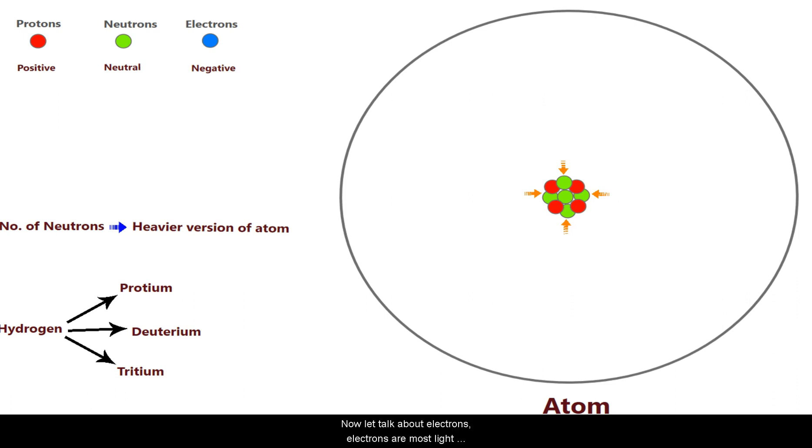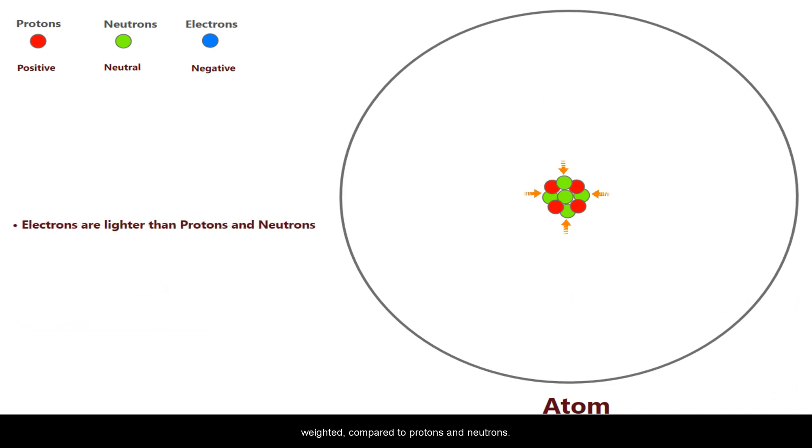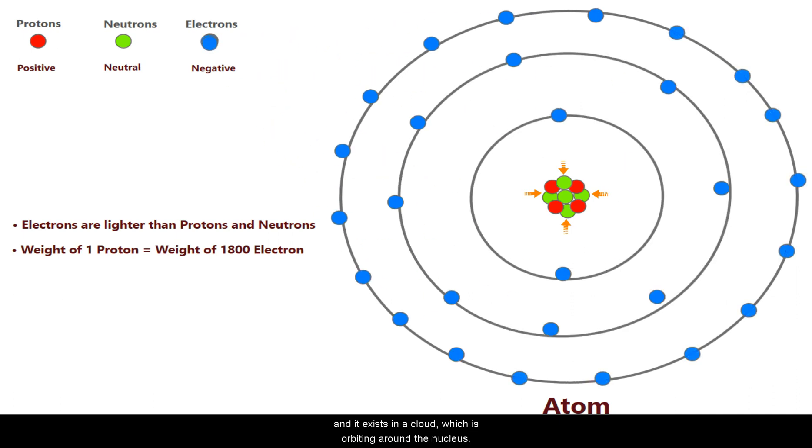Now let's talk about electrons. Electrons are most light-weighted compared to protons and neutrons. In fact, it is 1800 times smaller than protons and neutrons. And it exists in a cloud which is orbiting around the nucleus.